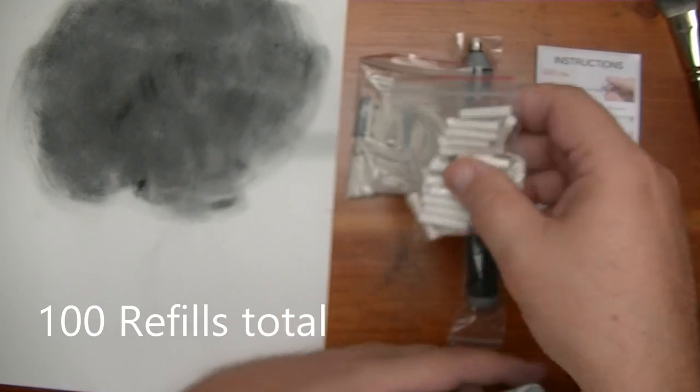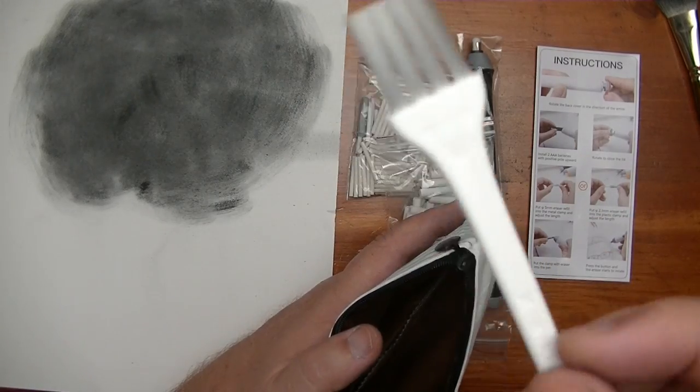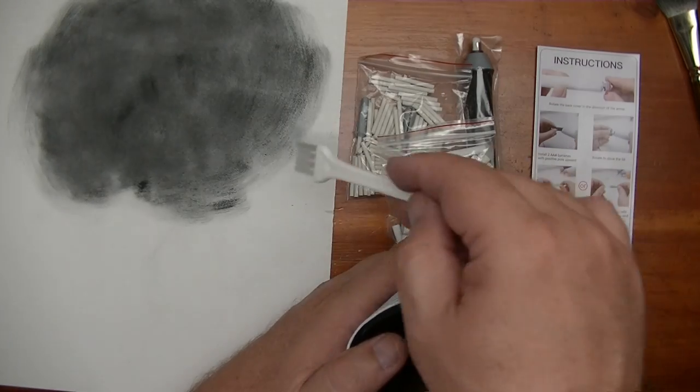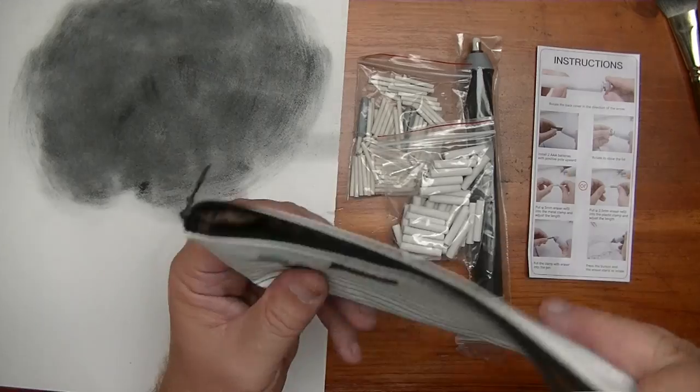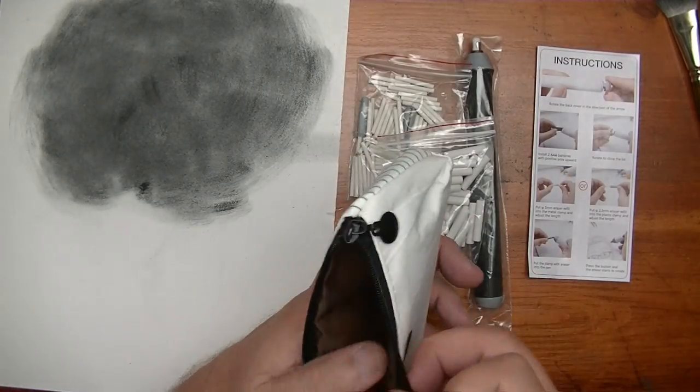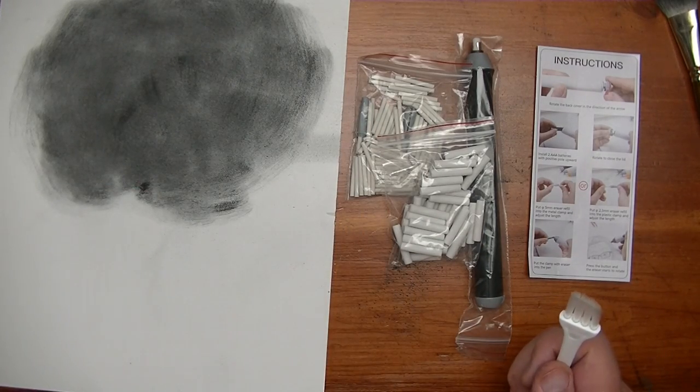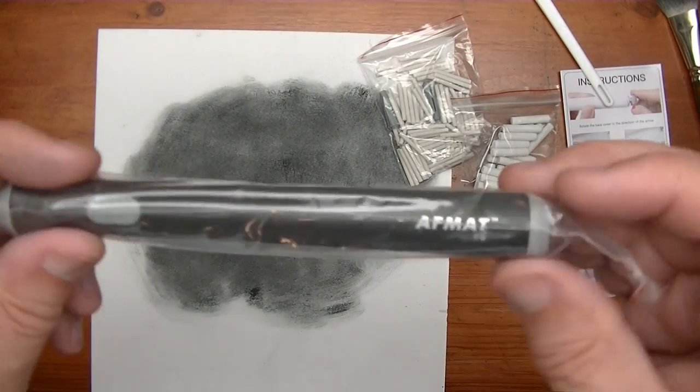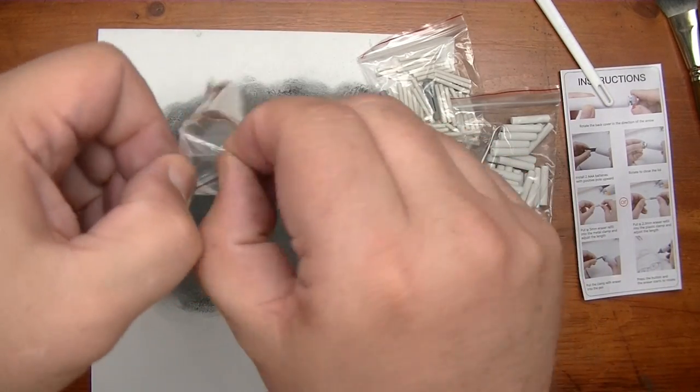We have this black stick electric eraser and it comes with a ton of these really skinny erasers which I am so happy to see. It comes with a whole bunch of these fat diameter erasers, so I am doubly happy and I will show you why in one second.